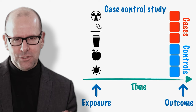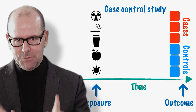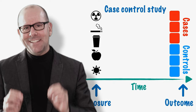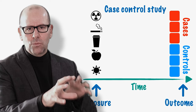With respect to cases and controls, we want them to be as similar to each other as possible, with the exception of the fact that they've got a different outcome. The cases have an outcome of interest and the control group doesn't. The reason we want them to be similar is so that we can compare them. Keep in mind that it is difficult, if not impossible, to guarantee that these two groups are similar in every single way — and that's one of the weaknesses of case control studies.